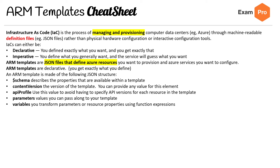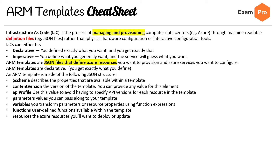There is a bunch of variations on variables and functions included in the cheat sheet, but that's practical skills content. Functions are user-defined functions available within the template — there are so many functions it wasn't even worth pulling them all out and listing them here. Resources are the Azure resources you want to deploy or update.